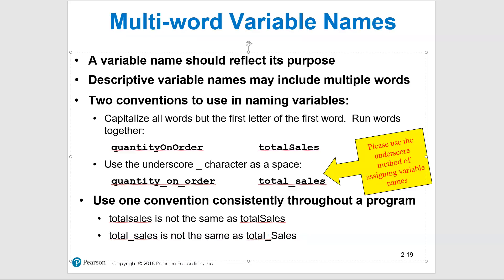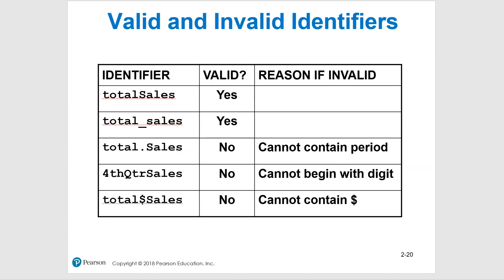Here are some examples of valid and invalid variable names. 'total_sales' — valid. 'totalSales' — valid. 'total.sales' with a period — invalid, can't use a period. '4thQuarterSales' — invalid, cannot begin with a digit. A better name would be 'sales_fourth_quarter'. Also, you cannot use a dollar sign in a variable name.